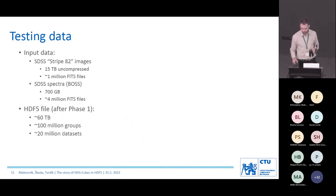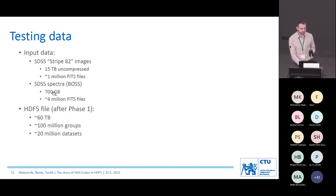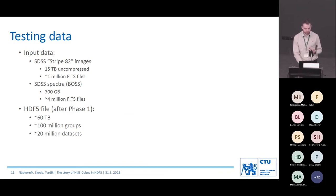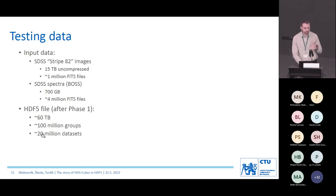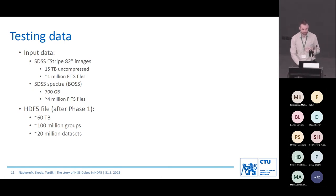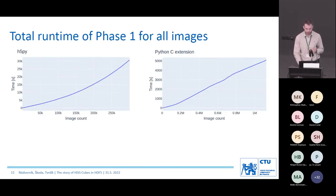We tested on SDSS data: images and spectra — 15 terabytes and 700 gigabytes respectively. The challenging part is one million FITS files for images and four million FITS files for spectra, so really a lot of tiny files. In the end, after phase one pre-allocation, the HDF5 file has 100 million groups as part of the tree index structure, and 20 million datasets, because we pre-compute lower resolutions for the original images and spectra as well — which can be challenging in HDF5.